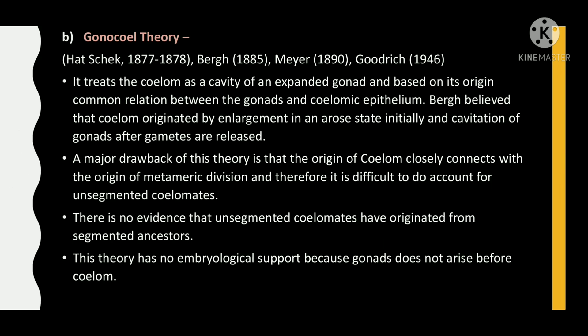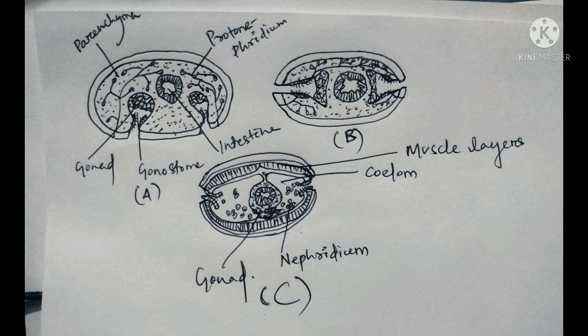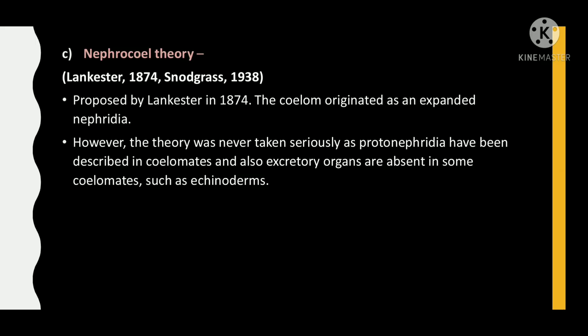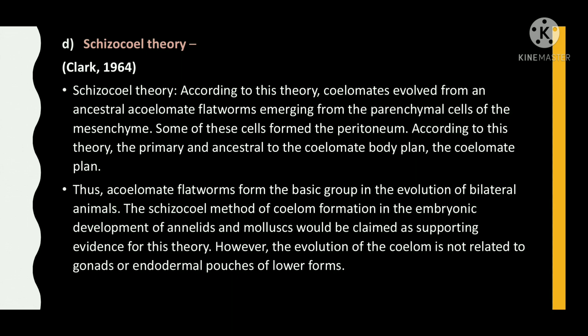There is no evidence that unsegmented coelomates have originated from segmented ancestors. This theory has no embryological support because the gonad does not arise before the coelom. These diagrams represent the gonocoel theory. The nephrocoel theory, proposed by Lancaster in 1874, states that the coelom originated as an expanded nephridium. However, the theory was never taken seriously as proto-nephridia have been described in coelomates, and excretory organs are absent in coelomates such as echinoderms.